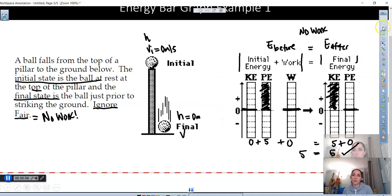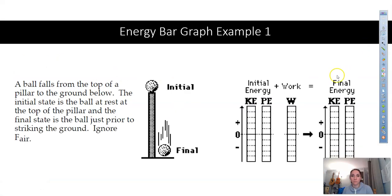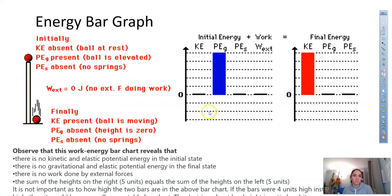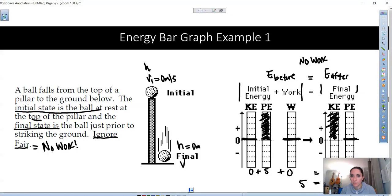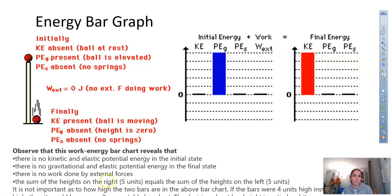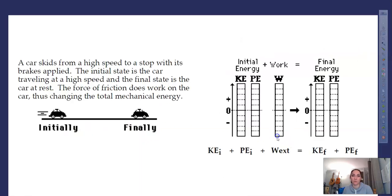This is how you solve one example of the bar graph — an object falling with no work because we ignored air resistance. It's the same idea presented in the textbook with gravitational potential energy and kinetic energy.